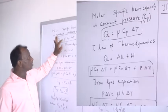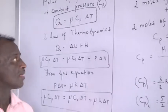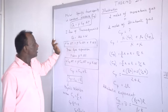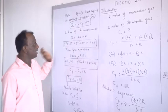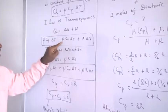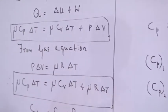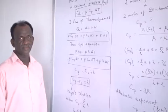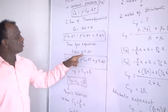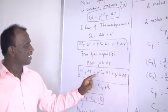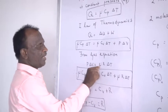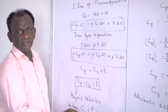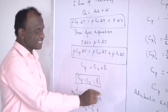The heat at constant pressure is Q = μ Cp ΔT. From the first law, Q = ΔU + W. Substituting μ Cp ΔT for Q, μ Cv ΔT for ΔU, and from the gas equation P dV = μR dT for W, we get μ Cp ΔT = μ Cv ΔT + μR ΔT. After canceling common factors, Cp = Cv + R, which can be written as Cp − Cv = R. This is called Mayer's relation.